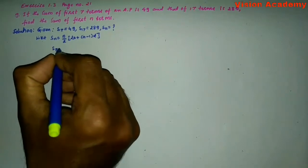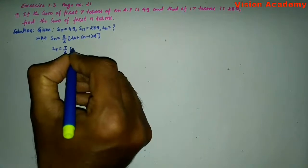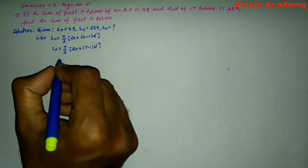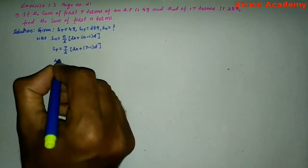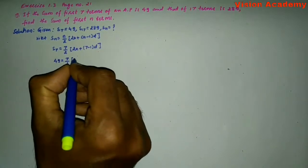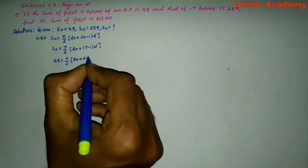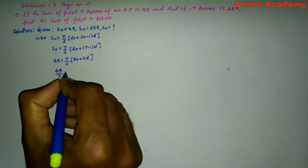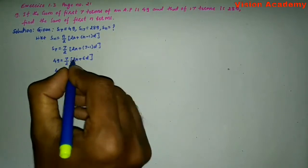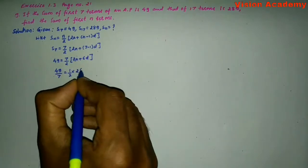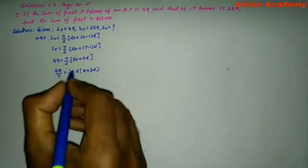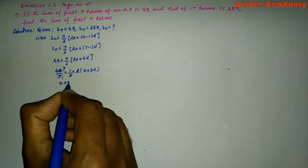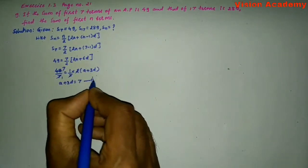We are going to substitute the value n = 7: S7 is equal to 7 divided by 2 into 2a plus 7 minus 1 into d. S7 is 49, so 49 is equal to 7 divided by 2 into 2a plus 6d. Transforming 7 from RHS to LHS, 49 divided by 7 equals 1 by 2 into 2 times a plus 3d. The 2s cancel, giving us a plus 3d is equal to 7. Let us consider this as equation number 1.